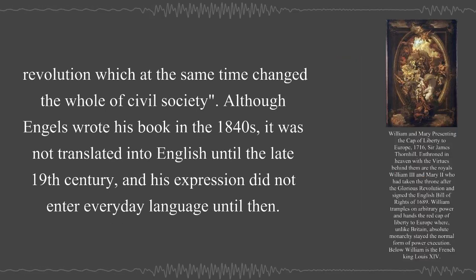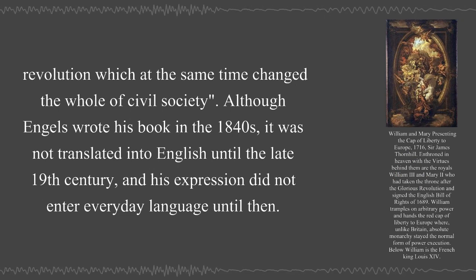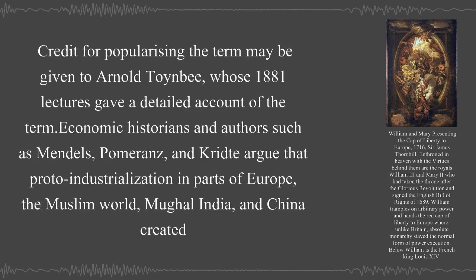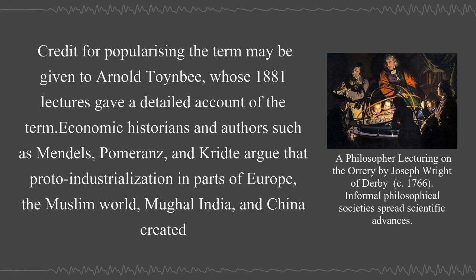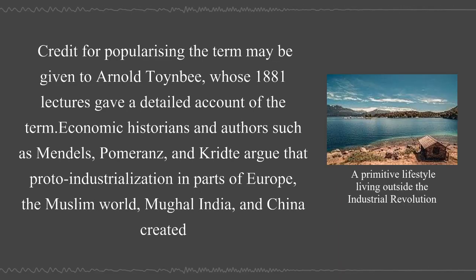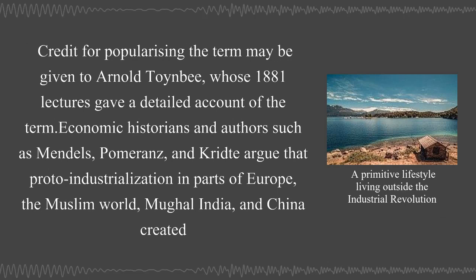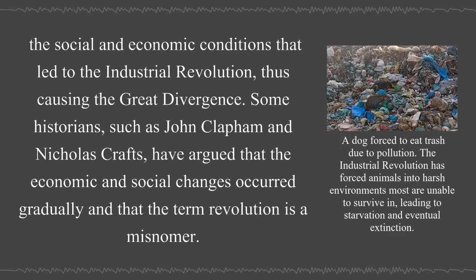Although Engels wrote his book in the 1840s, it was not translated into English until the late 19th century. Credit for popularizing the term may be given to Arnold Toynbee, whose 1881 lectures gave a detailed account of the term. Economic historians such as Mendels, Pomeranz, and Critty argue that proto-industrialization in parts of Europe, the Muslim world, Mughal India, and China created the social and economic conditions that led to the Industrial Revolution, thus causing the Great Divergence.